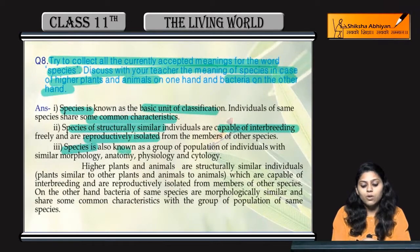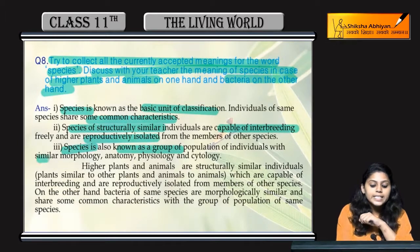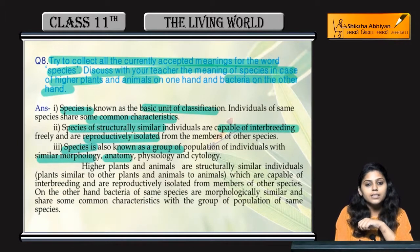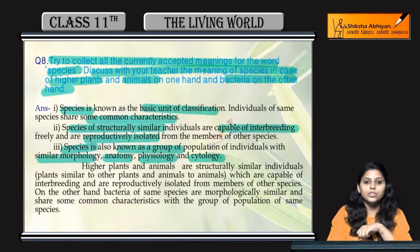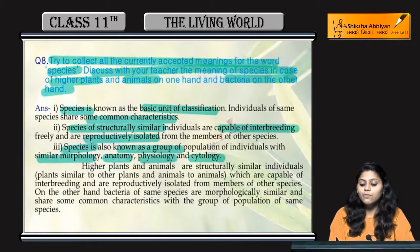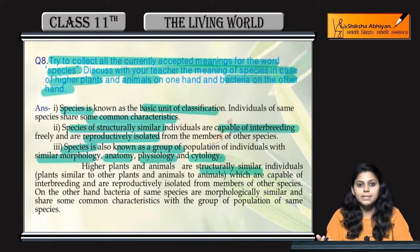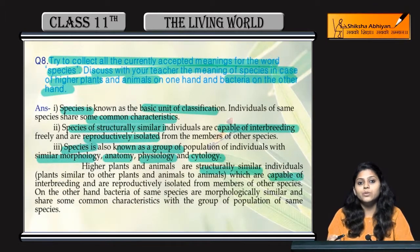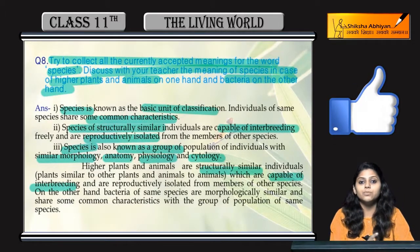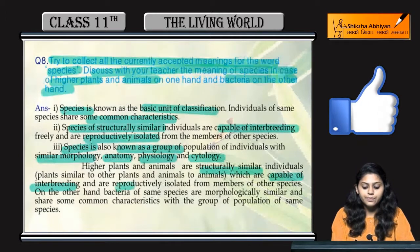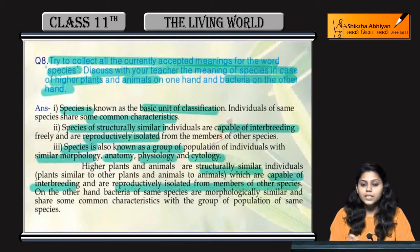Species is also known as a group of population of individuals jho similar morphology, anatomy, physiology aur cytology show kertay hain. Plants structurally similar plants ke saath hootay hain, aur animals animals ke similar hootay hain, jho capable hootay hain of interbreeding. And they are reproductively isolated from the members of other species.